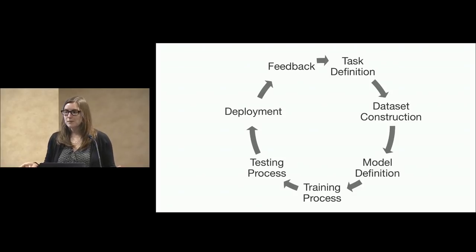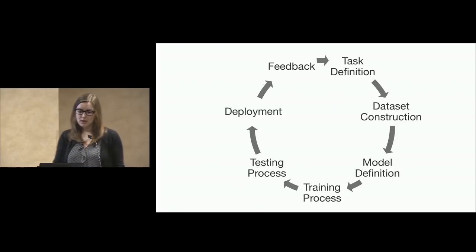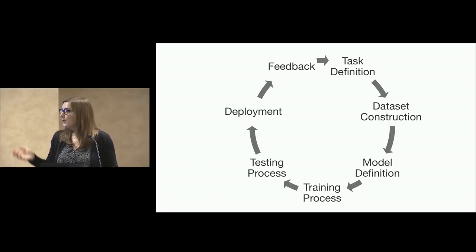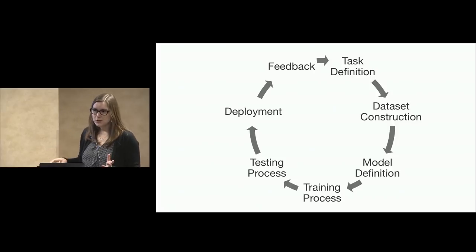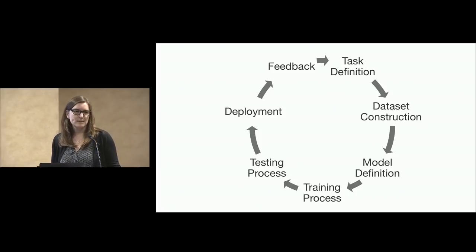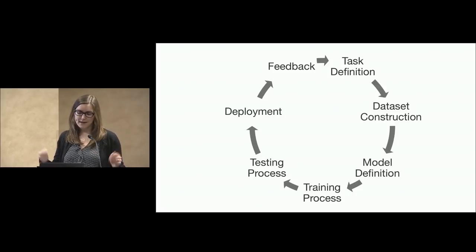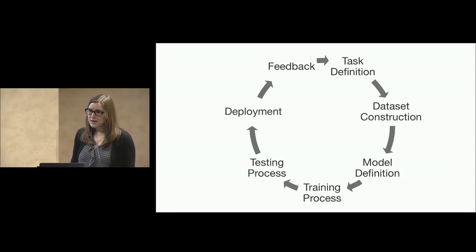In industry, a typical machine learning lifecycle looks like this: we start by defining the task or problem; next, construct a dataset by selecting a source, acquiring, pre-processing, and perhaps labeling the data; third, define a model — decision tree or neural network — and choose an objective function, each with implicit assumptions; fourth, train the model; fifth, test and validate on held-out test data; sixth, deploy in the real world; and finally, gather feedback to improve the system.